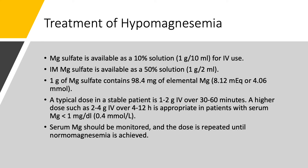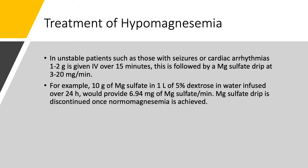A typical dose in a stable patient is 1 to 2 grams over 30 to 60 minutes. You can use a higher dose over a longer period if serum magnesium is very low — for example, if magnesium is less than 1, you may give 4 to 6 grams over 4 to 6 hours. We monitor serum magnesium and repeat replacement until normal magnesemia is achieved. If the patient has seizures or cardiac arrhythmias, give 1 to 2 grams quickly over 15 minutes, then continue with additional 1 to 2 gram doses or a drip.